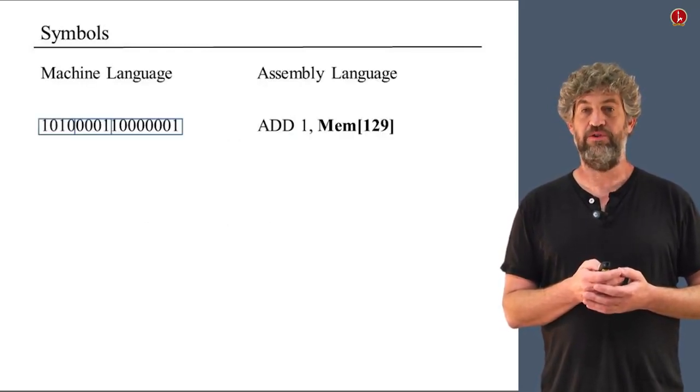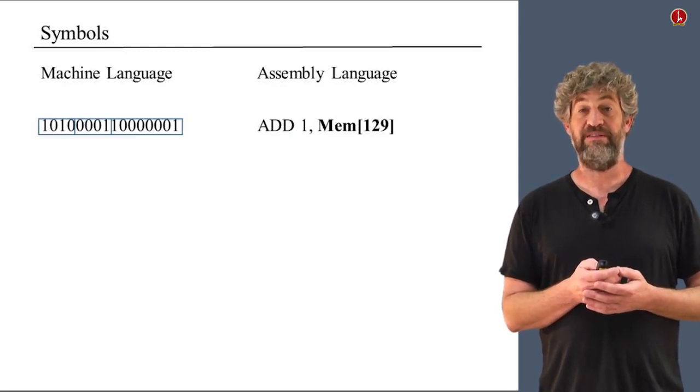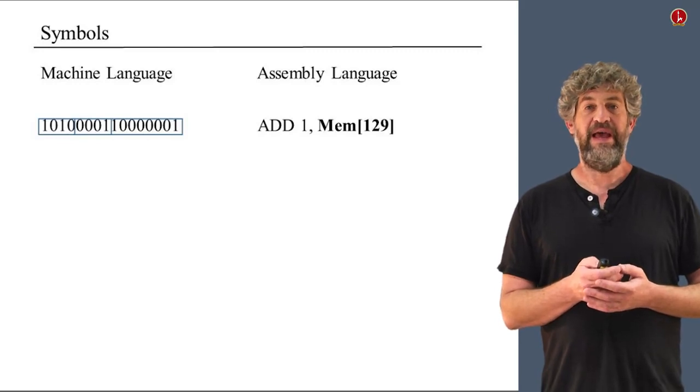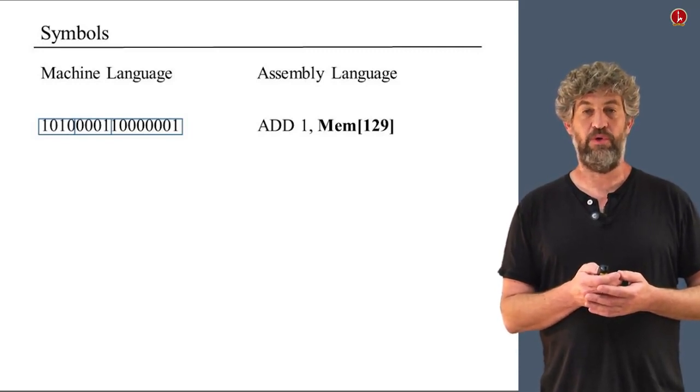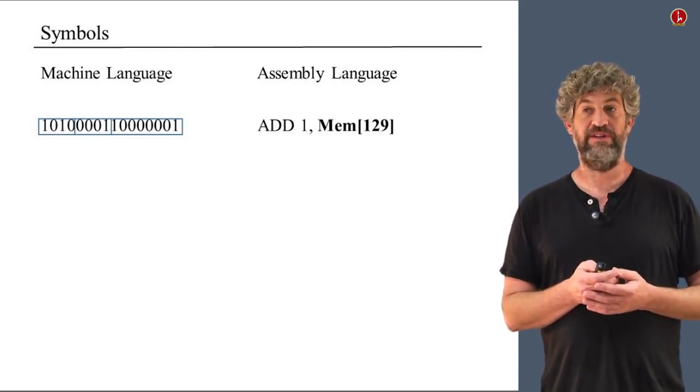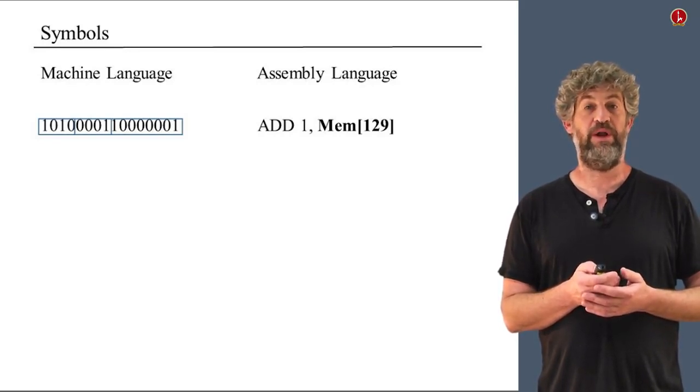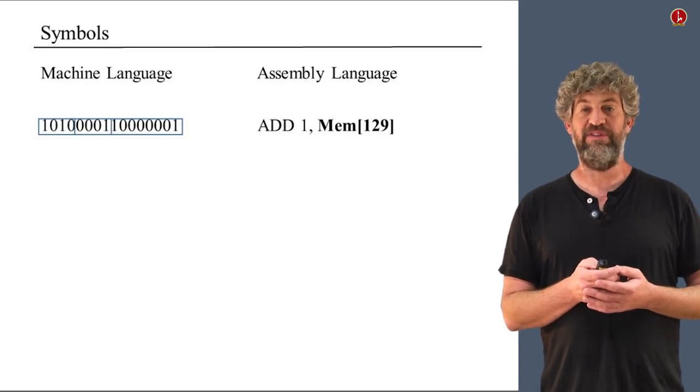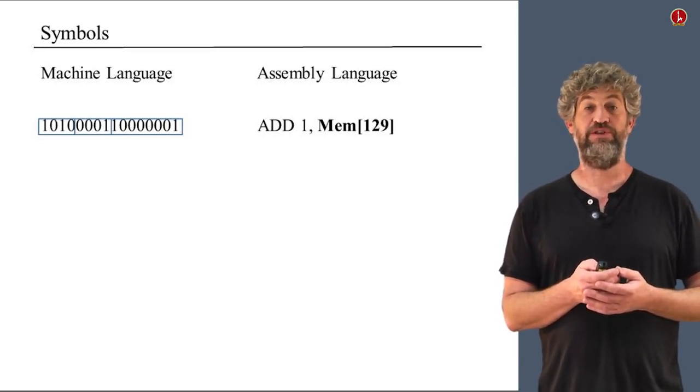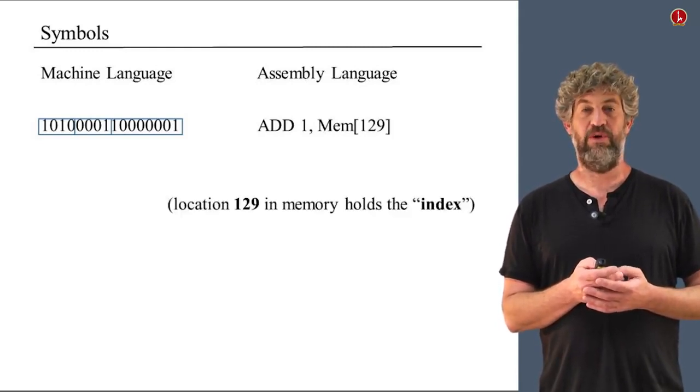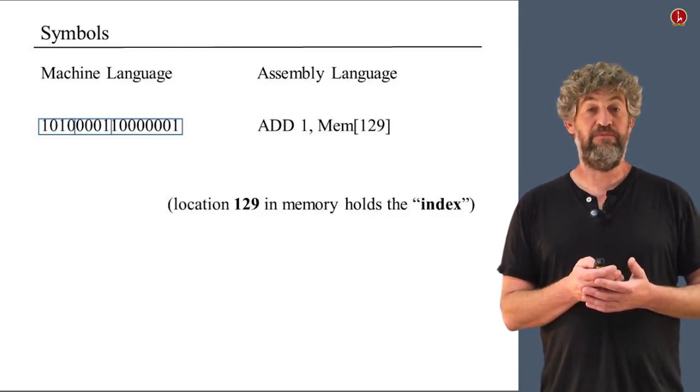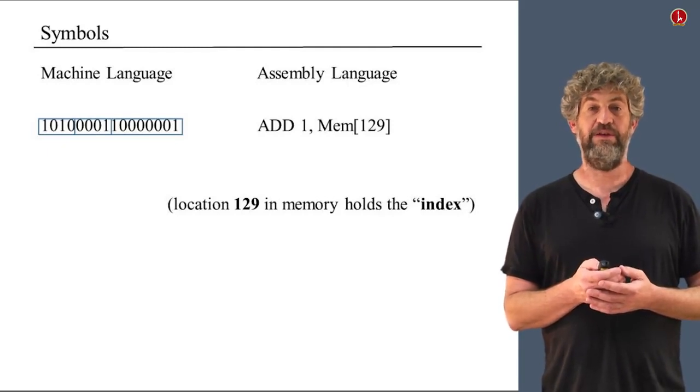While we're at it, making things a little bit easier to write programs in machine language for the rare cases that we need to do that, including this course, there's another thing that we get for free, which is called symbols. A lot of times in a machine language program, we need to access memory locations. For example, there could be a command that tells add one to memory location 129. Now, the point is for the programmer writing that, it's not really important that we talk about memory location 129. What the programmer has in mind is that we're going to keep some kind of index in that memory location.